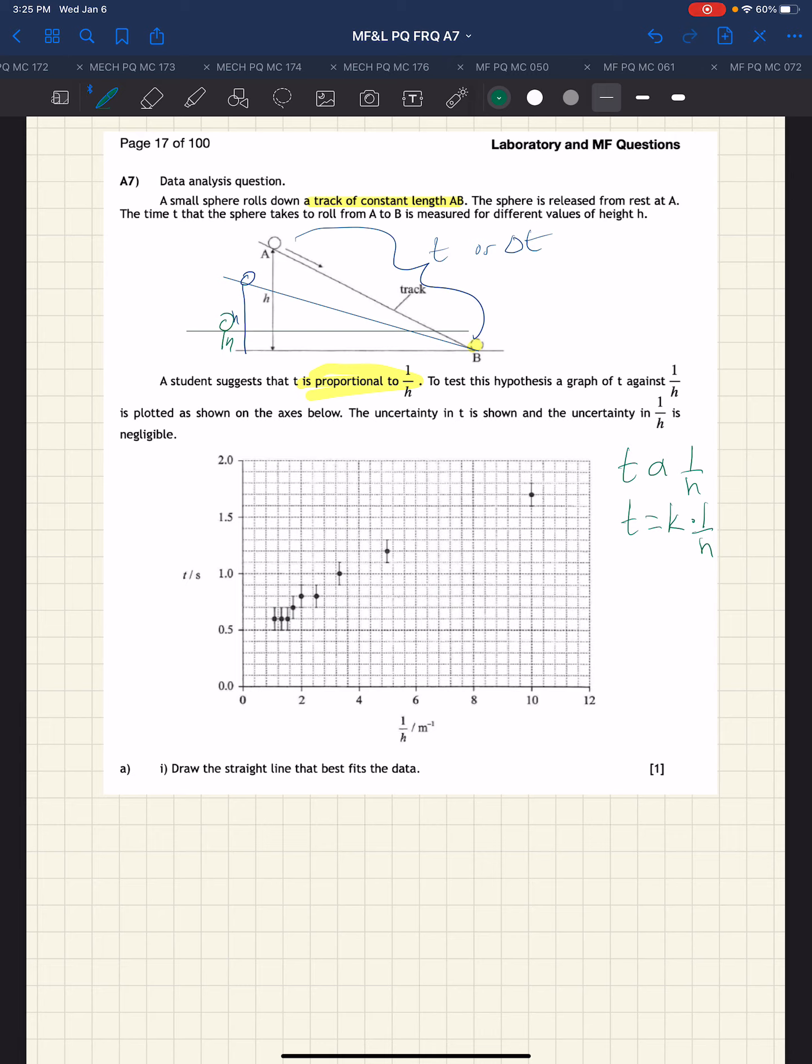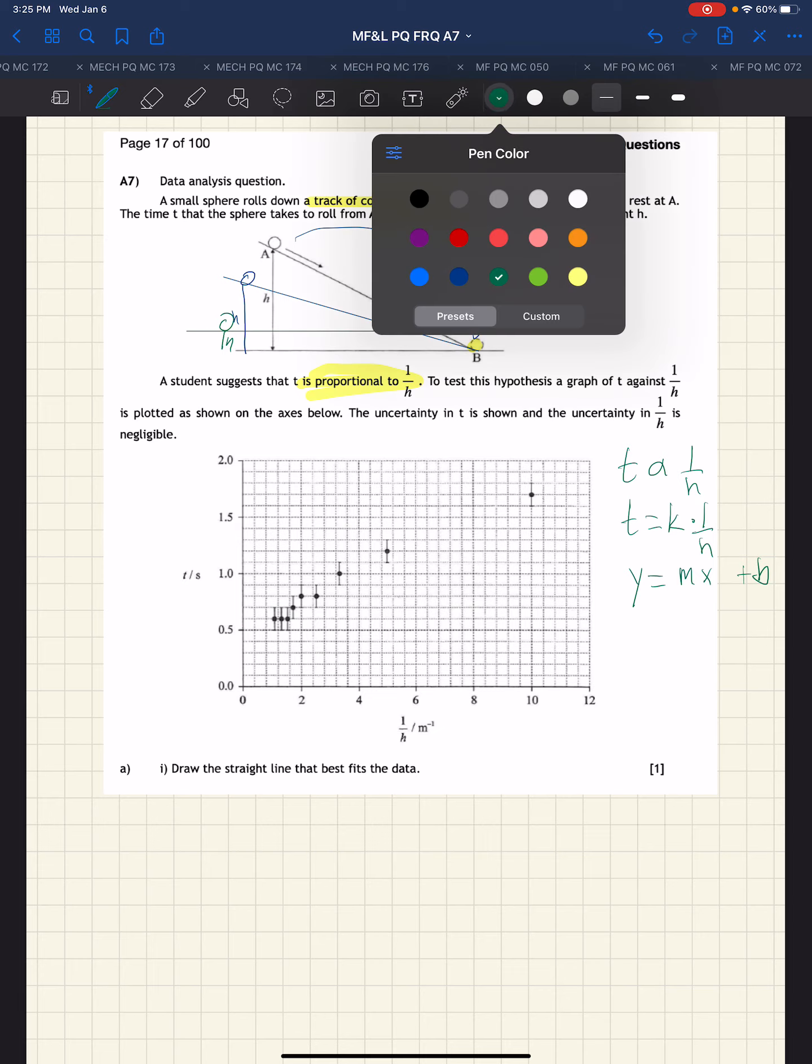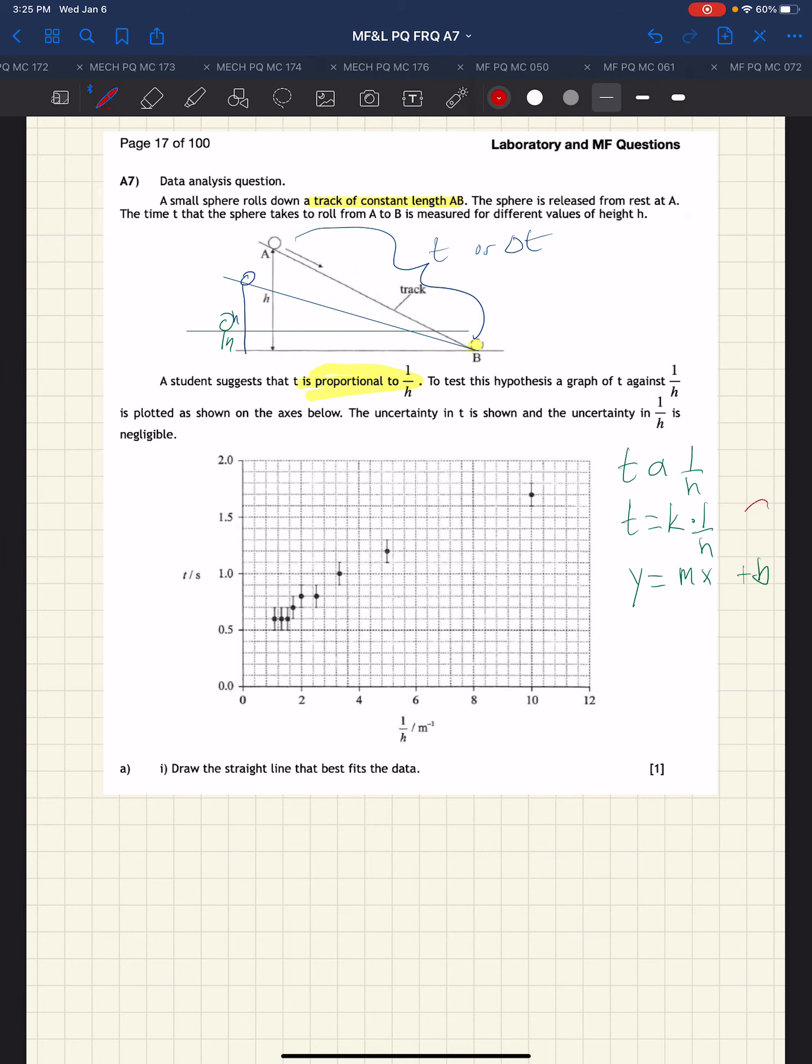Whenever we see an equation like this, we should be thinking, how does this compare to a straight line? And so we have Y equals MX plus B. The first thing for us to note is that the Y-intercept part is missing, so it is plus 0. There is no Y-intercept.